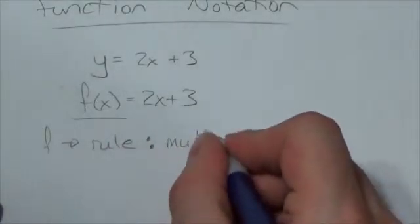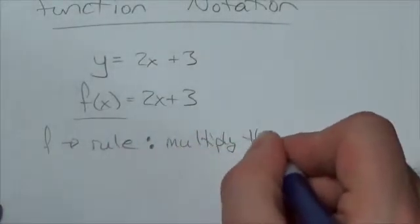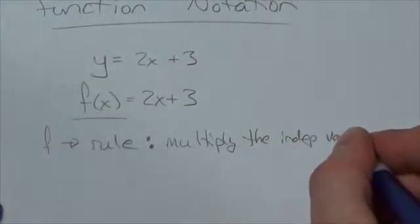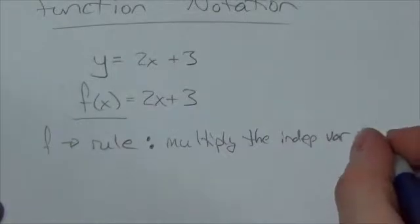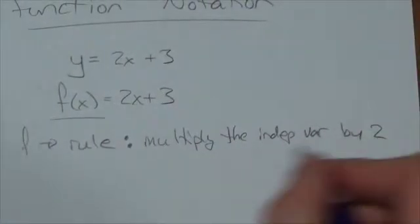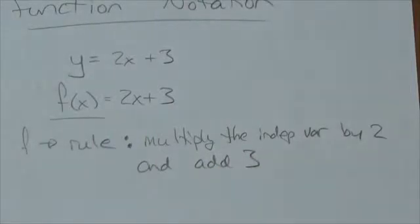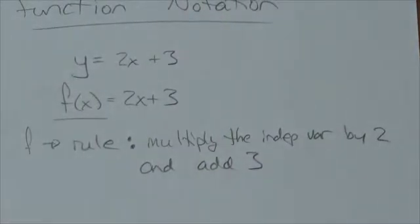The rule is multiply the independent variable by 2 and add 3. That is what f means.